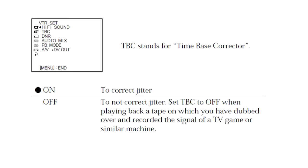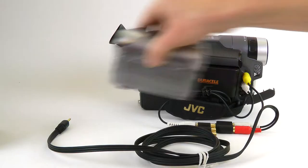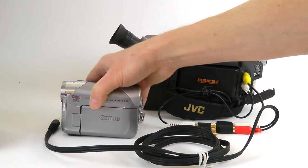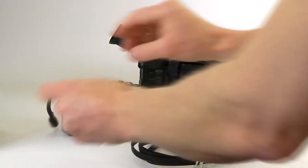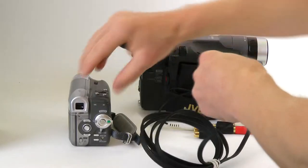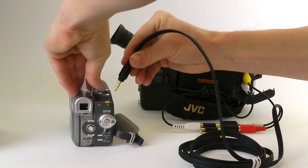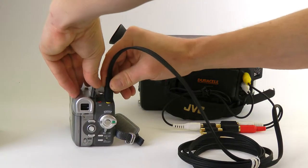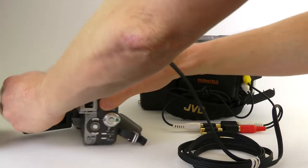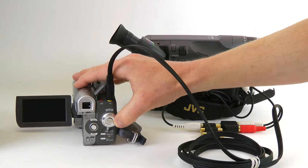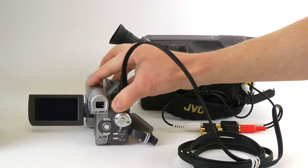Some camcorders also have a built-in time-base corrector, which can improve the geometry and stability of analog video. Using passthrough works very similar to capturing DV video from tape, but instead of playing a tape in a DV camcorder, you play it in your analog camcorder or VCR.